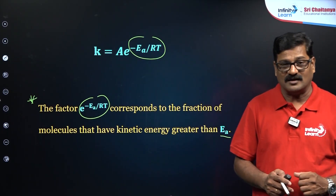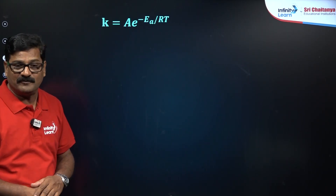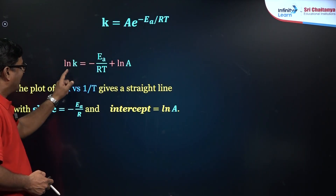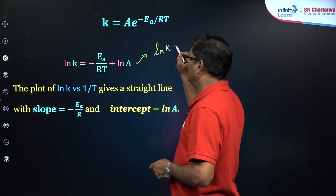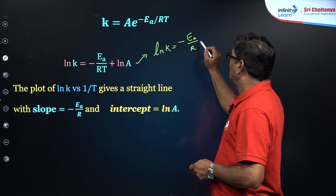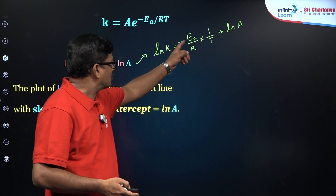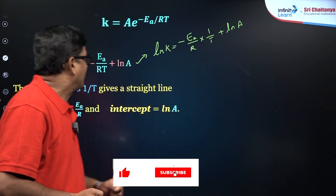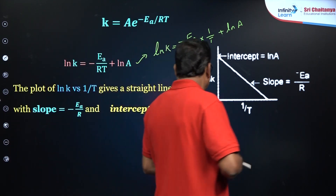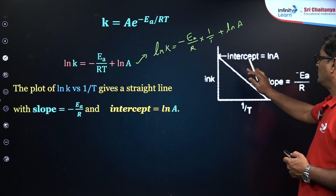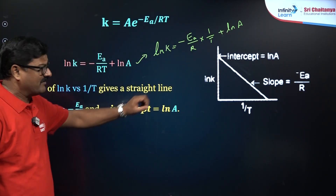Taking the natural logarithm of the Arrhenius equation: ln K = −Ea/RT + ln A. This equation has the form Y = MX + C — a straight line equation — where Y = ln K, X = 1/T, slope = −Ea/R, and intercept = ln A. Plotting ln K versus 1/T gives a straight line with a negative slope. NEET examination questions may present different graphs and ask you to pick the correct one.